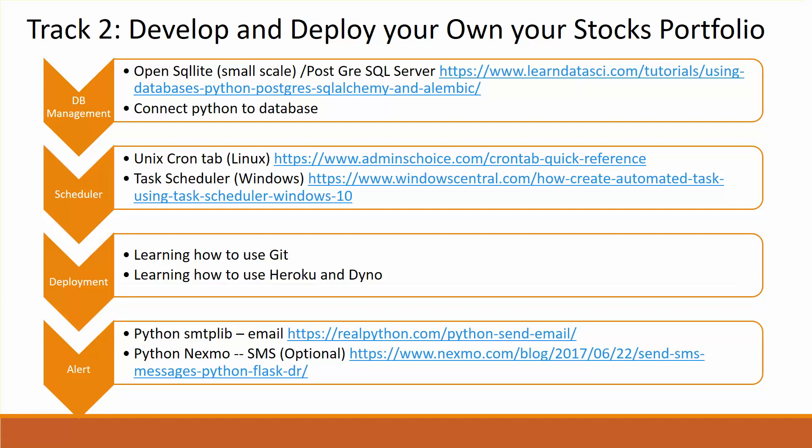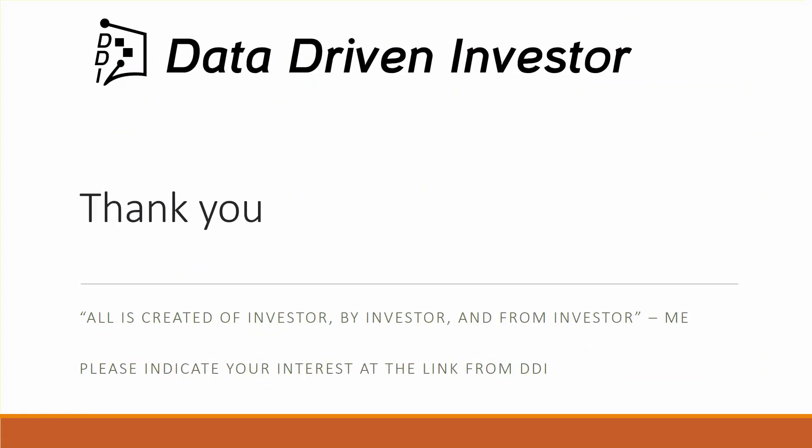We'll cover best practices in database management using SQL, scheduling to automate your web scraping deployments, and deployment tools including Git and Heroku so that you, your manager, or anyone can use your applications. Finally, we'll set up alerts using SMTP so you can be notified whenever your stocks crash or spike.